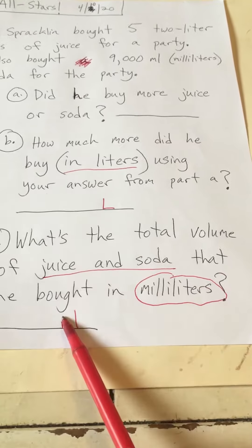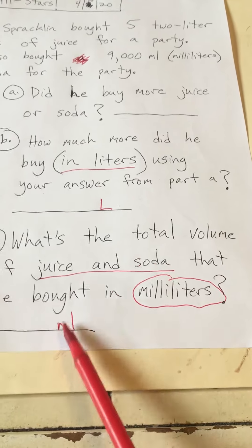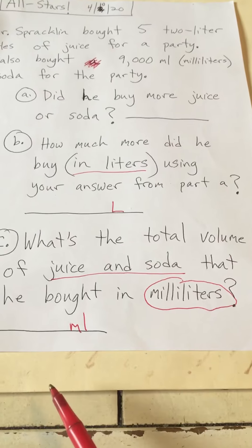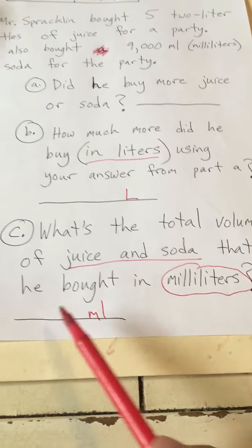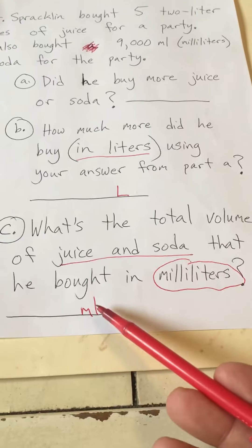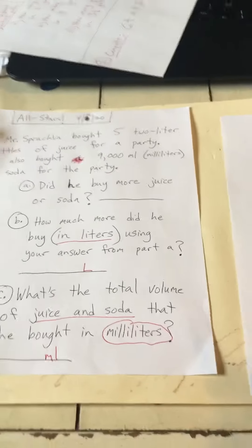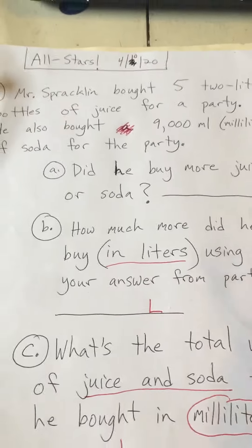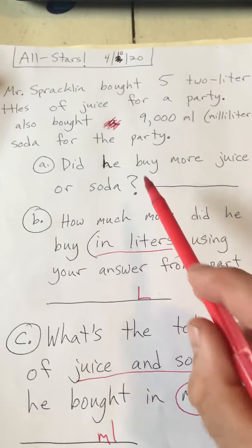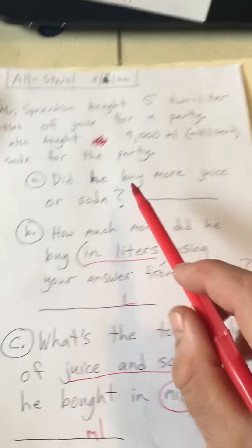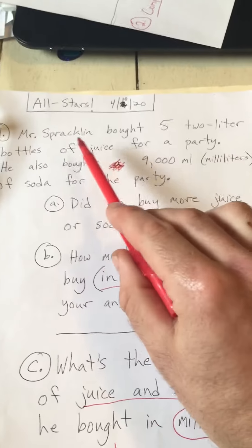Since part C's answer has to be in milliliters, I'll put 'ml' right there so that if you write a liter answer, you might catch yourself. Same thing for part B — we're going to put an 'L' to stand for liters. Okay, so let's go back to the problem: did he buy more juice or soda?